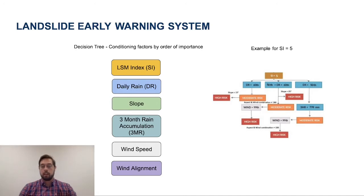As we can see, for different intervals of our conditioning factors, we can derive the risk. Once we have the landslide susceptibility map and the decision tree, we can show a dynamic map that only highlights the areas having a high risk.